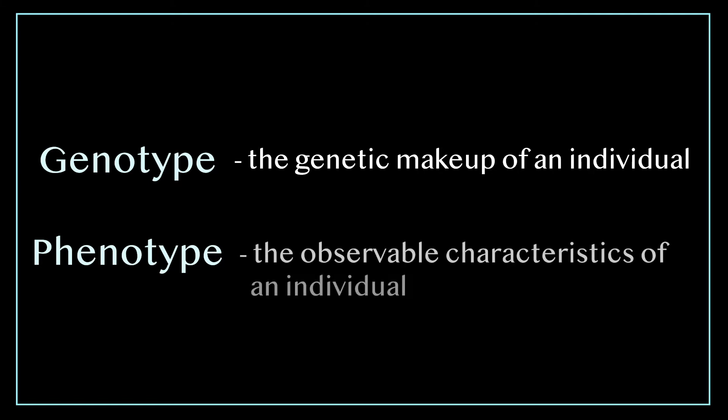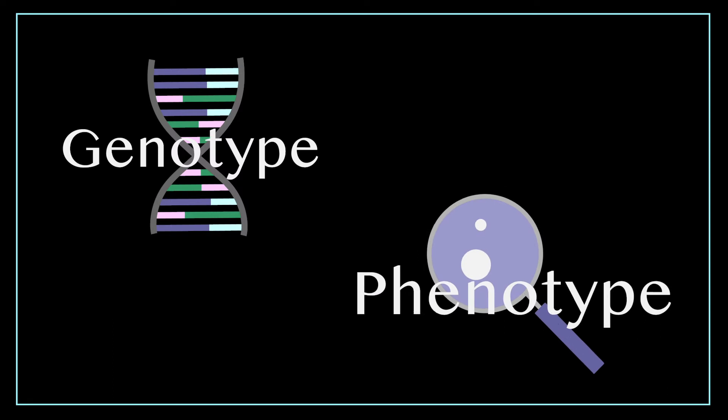Genotype and phenotype. These terms are really simple. Genotype refers to the genetic makeup of the individual and phenotype refers to the observable characteristics. Simply put, genotype is the genes, phenotype is what you can see. These two terms are fairly straightforward but often people will get confused on tests with the wording so make sure you understand it.